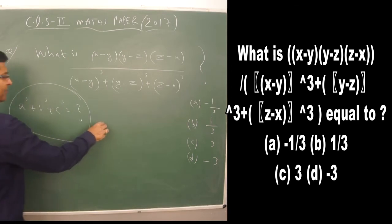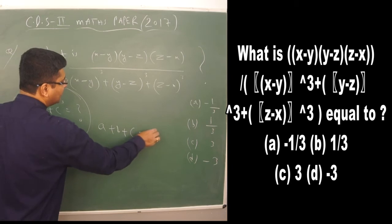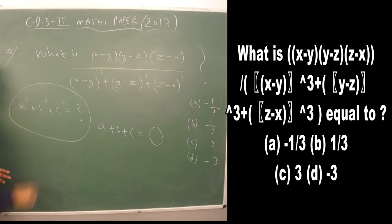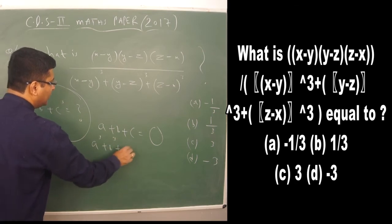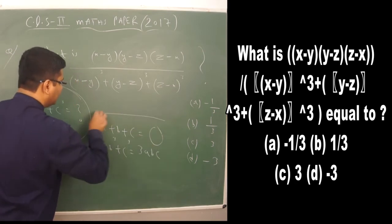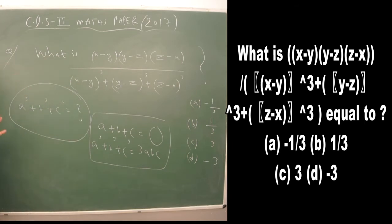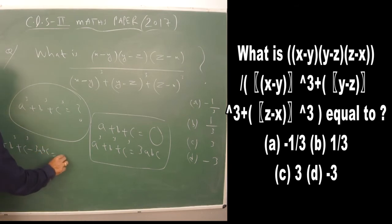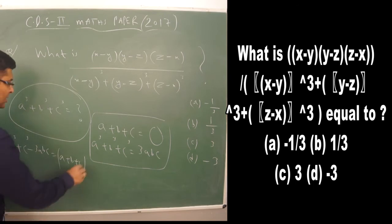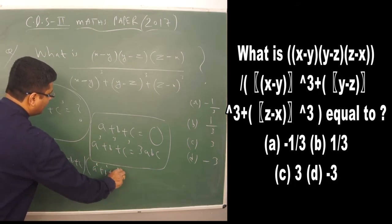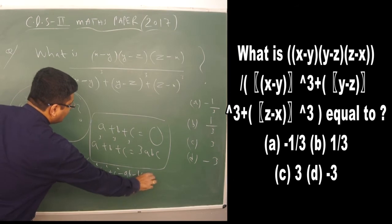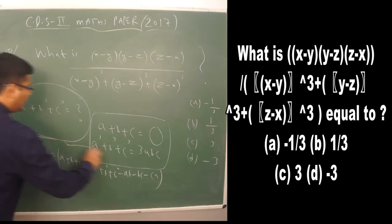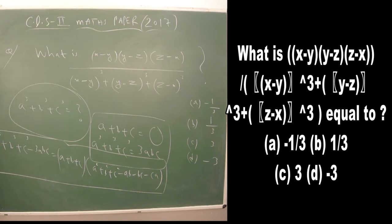You don't need to open any formula — just apply the concept: if a + b + c = 0, then a³ + b³ + c³ = 3abc. The full identity is a³ + b³ + c³ − 3abc = (a+b+c)(a²+b²+c²−ab−bc−ca).